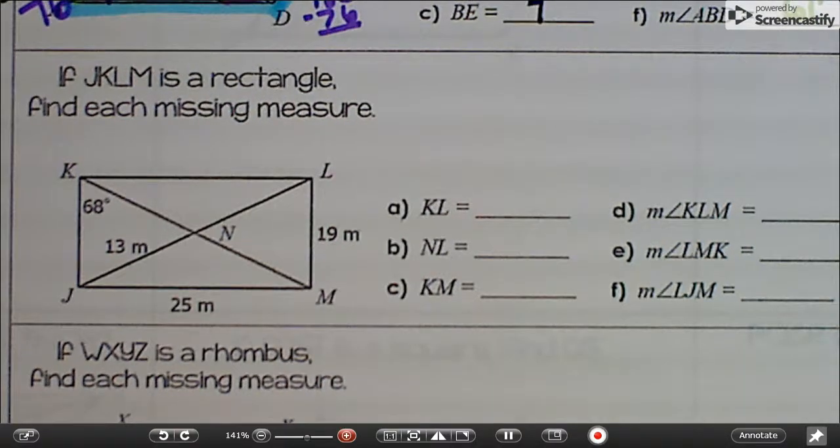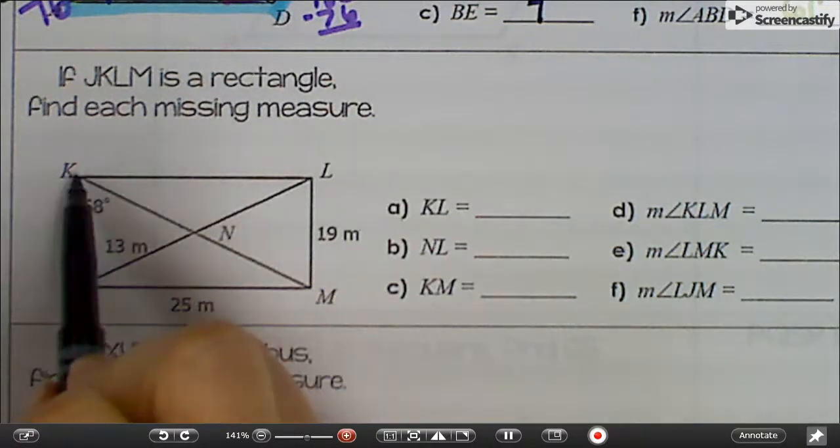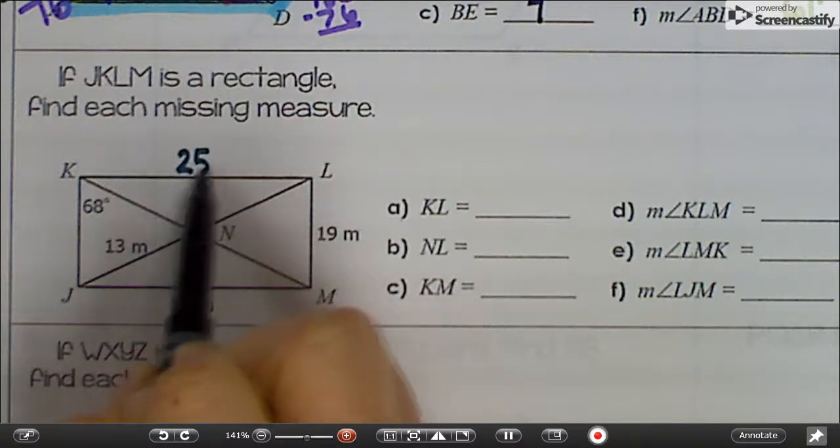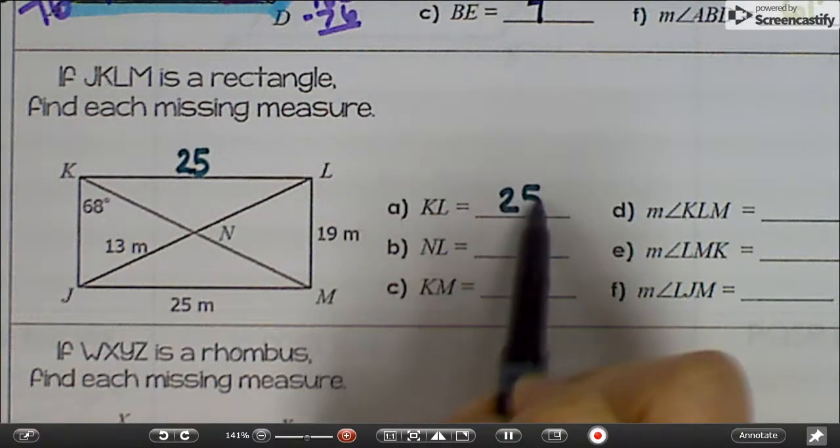JKLM is a rectangle. Find each measure. All right. So KL is this side. So the one across from it, opposite, is 25. So KL has to be 25.